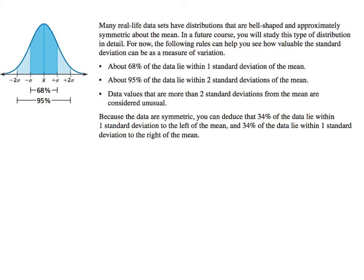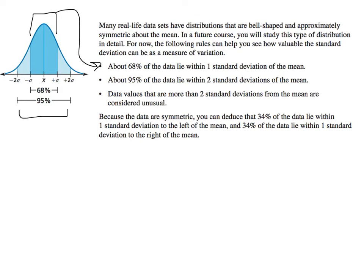In a future course you will study this type of distribution in detail. For now, just use the following rules: 68% of the data will lie within one standard deviation of the mean — that dark blue region represents 68% of the data. 95% of the data is within two standard deviations of the mean, and data values more than two standard deviations from the mean are considered unusual. Because the data are symmetric, 34% of the data lie within one standard deviation to the left and one standard deviation to the right.